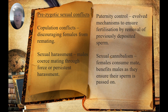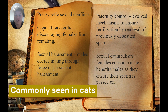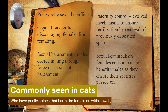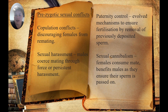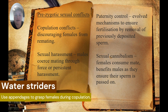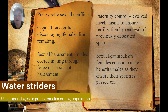Pre-zygotic sexual conflicts prevent remating to ensure fertilisation prior to zygote formation. These include conflict over copulation, where males try to discourage females from remating, and sexual harassment, where males coerce mating through physical force — seen in water striders and garter snakes.